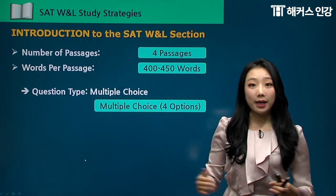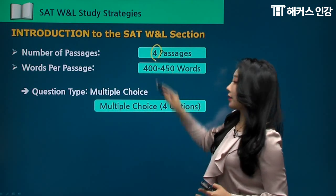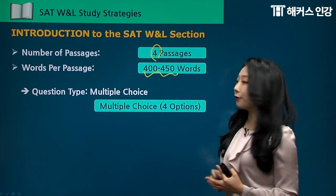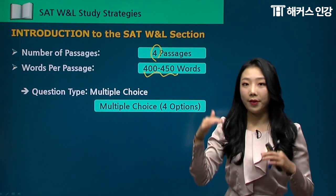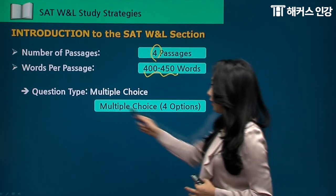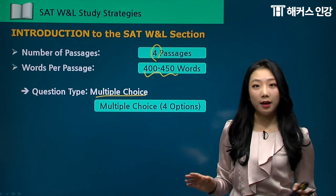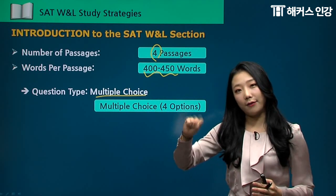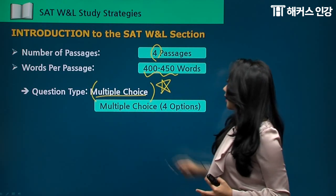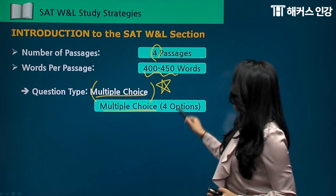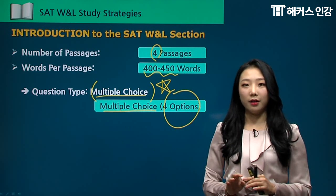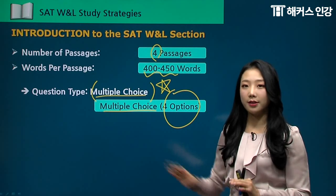The number of passages you'll get on the test is a total of four passages. Words per passage is 400 to 450 words, so the passages aren't very long, especially compared to the reading section. Question type is all multiple choice — you get four options, A, B, C, and D, and there is only one correct answer out of the four.